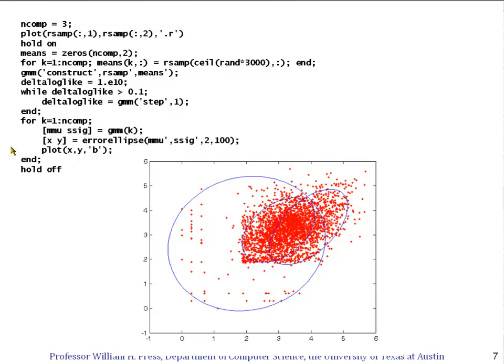Here's the answer with three components. You can see the code is very similar to the code we just saw. We define starting points for the means of the components by simply picking random points within the sample. For three components, we pick three random points and assign their location to the starting means. We construct the Gaussian mixture model here, then we iterate until the change in log likelihood is less than a tenth, and finally plot the resulting distribution.